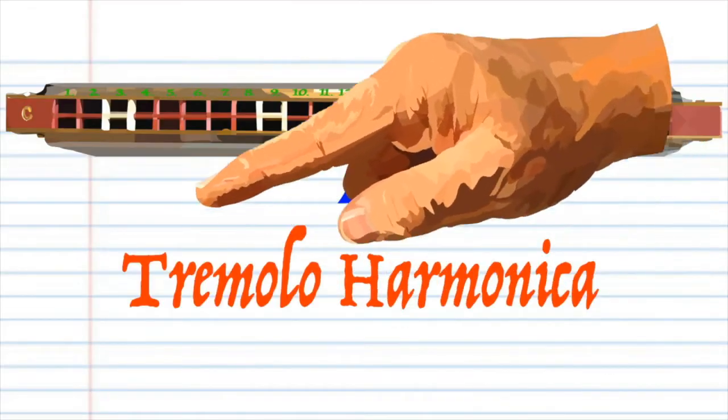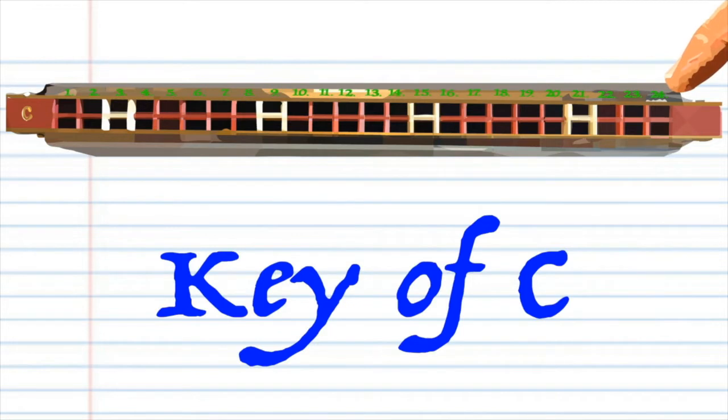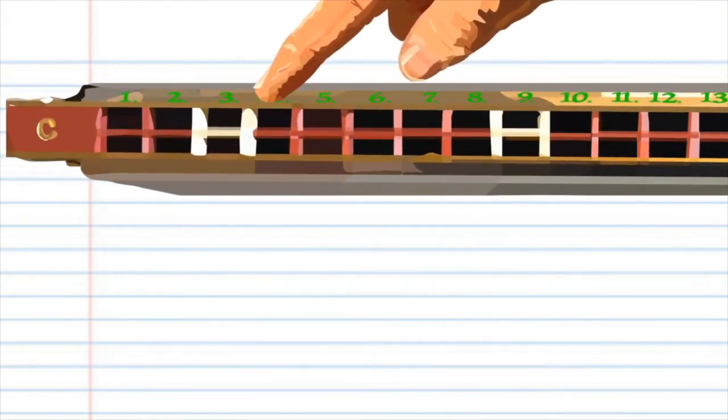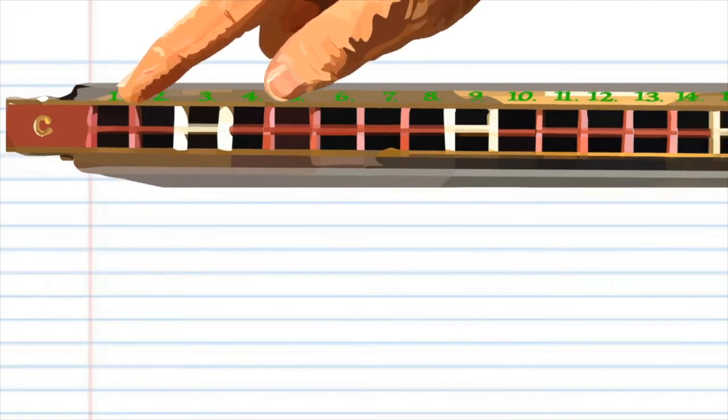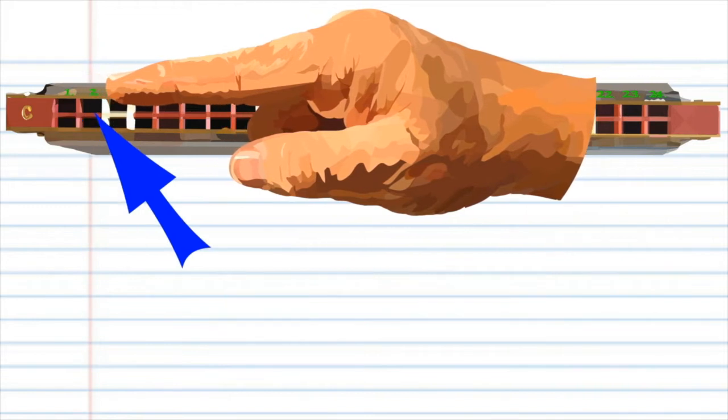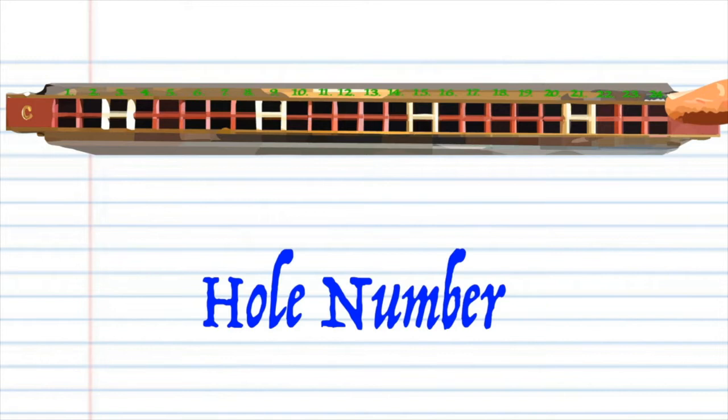Here is a tremolo harmonica with 24 holes. This tremolo is in the key of C, but don't worry if your tremolo is not in the key of C—it's the hole numbers that are important. If your tremolo is not numbered, then the first hole that produces the lowest note is hole number one, the second hole is hole number two, and so on right up to the last hole, which is hole number 24.